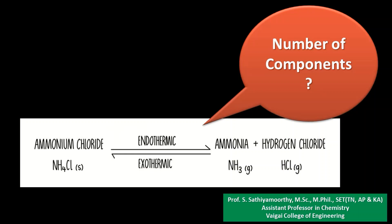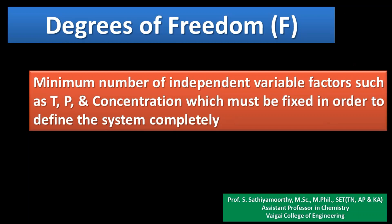For the interesting ammonium chloride system: ammonium chloride solid decomposes into ammonia and HCl in equivalent quantities. Because these two gases are present in equivalent quantities, by describing ammonium chloride itself it is quite easy to express all the phases — the ammonia and HCl present in gaseous phase. So the number of components here is only one; it is a one-component system.